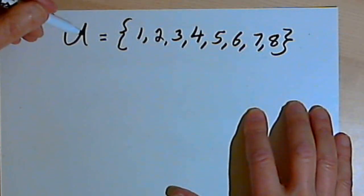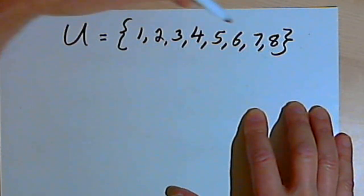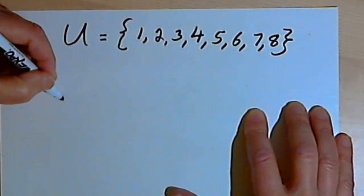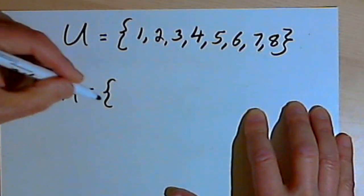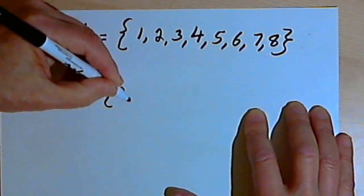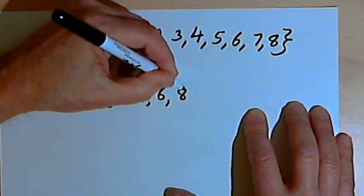So here my universe is going to consist of the numbers 1, 2, 3, and up to 8. I can create the set A as maybe all of the even numbers, 2, 4, 6, and 8.